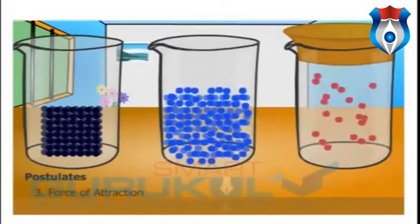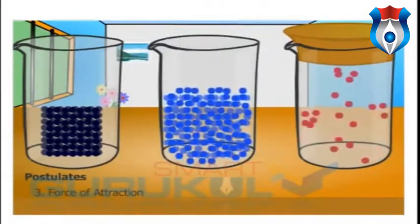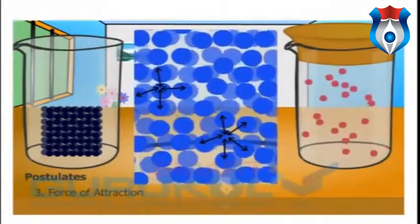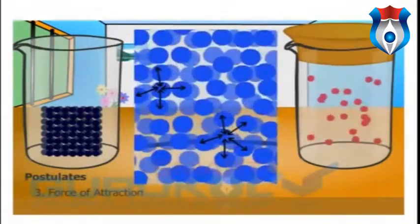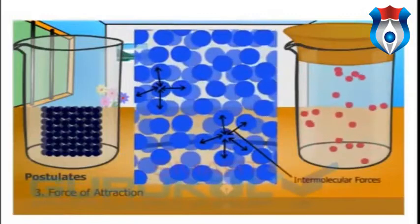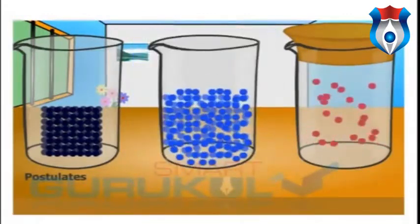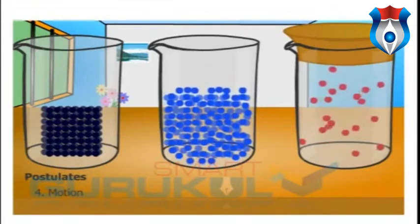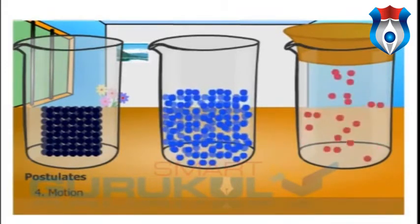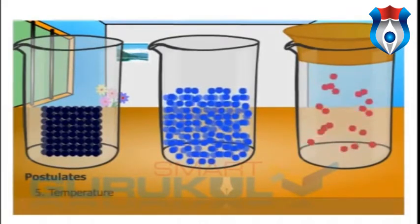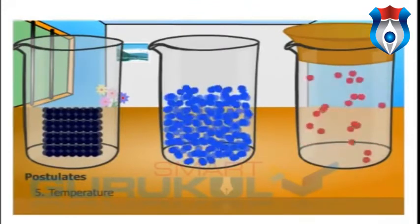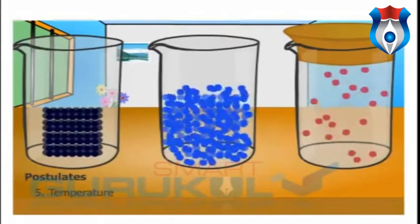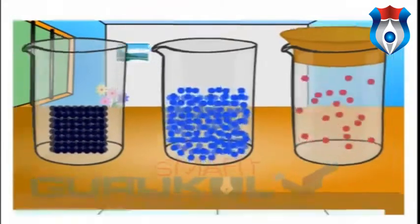The third postulate is force of attraction — the force of attraction between the molecules of a given substance is called intermolecular forces. The fourth is motion — according to this theory, the molecules are always in a state of motion. The fifth is temperature — on heating the molecules, the kinetic energy increases and they move faster.